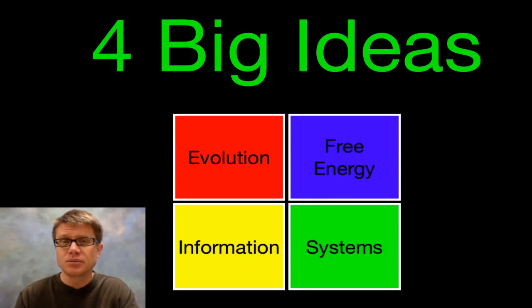And so basically those four big ideas were developed by the college board as they developed the new AP Biology framework. But they're pretty good standards. And so those are evolution, free energy, information, and systems. In other words, these are four big ideas that are going to cover all of biology.